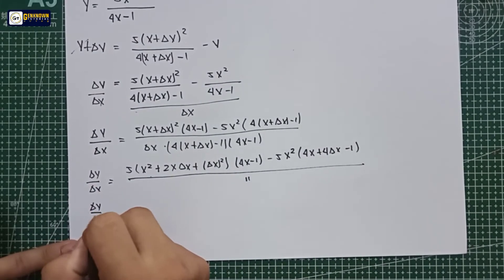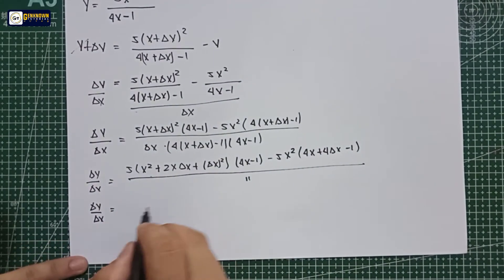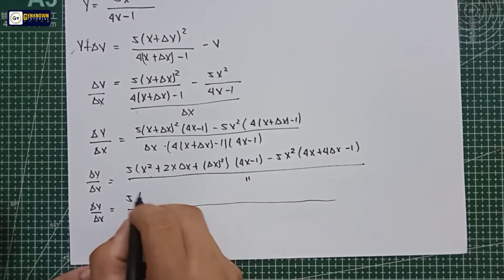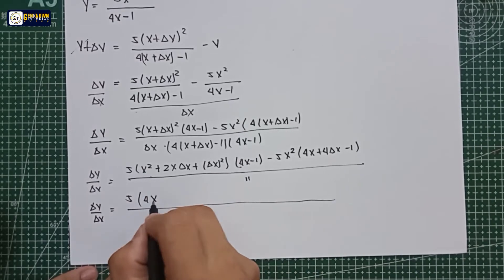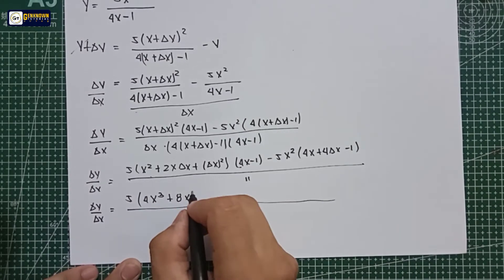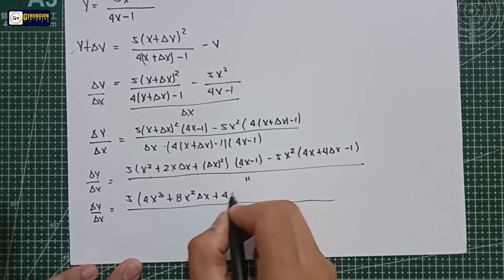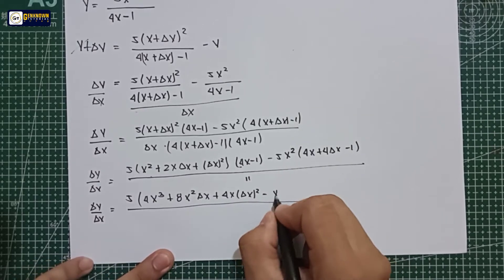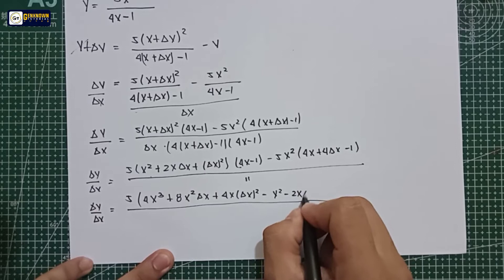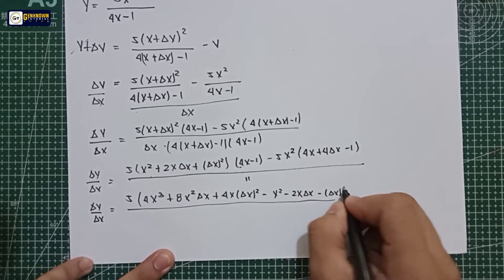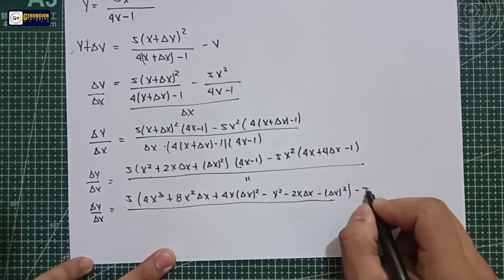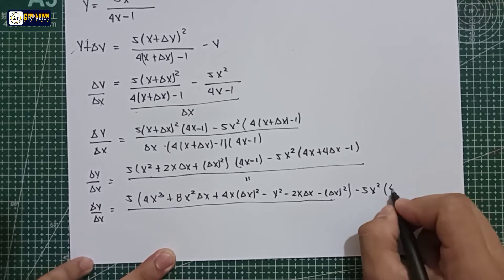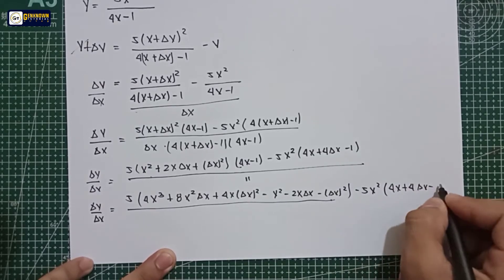So delta y over delta x is equal to: we have 4x cubed plus 8x squared·delta x plus 4x·delta x squared, minus x squared minus 2x·delta x minus delta x squared — all from the first group — minus 5x squared multiplied by (4x plus 4·delta x minus 1).